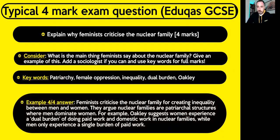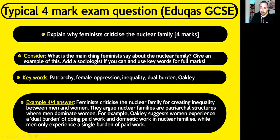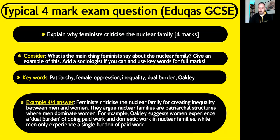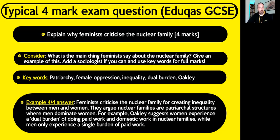Here's how a four-out-of-four answer looks: 'Feminists criticise the nuclear family for creating inequality between men and women. They argue that nuclear families are patriarchal structures where men dominate women. For example, Oakley suggests that women experience a dual burden of doing paid work and domestic work in nuclear families, while men only experience a single burden of paid work.' That's a really good example, about the right length. Write somewhere between four and six lines, get your sociologist in there, get your key words in there, and you'll be fine.